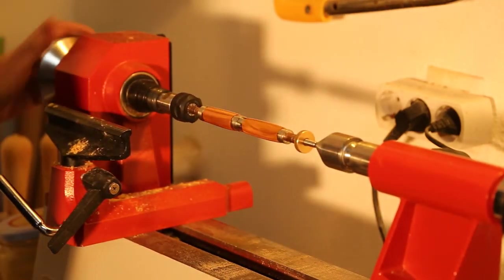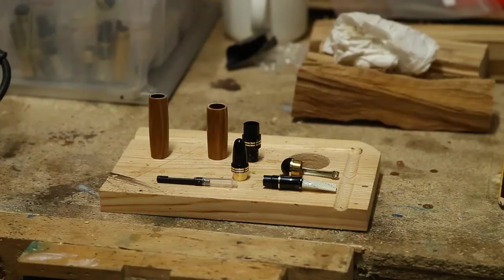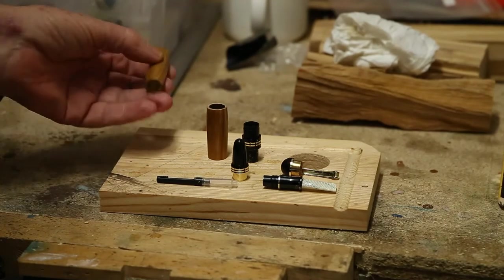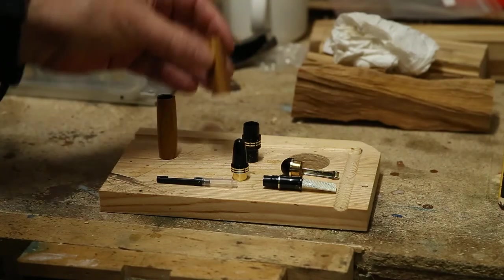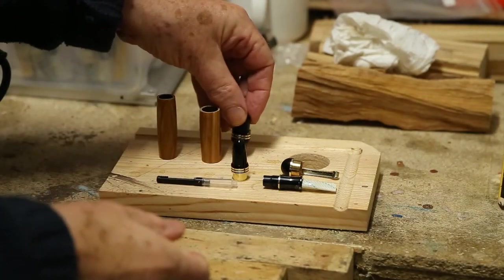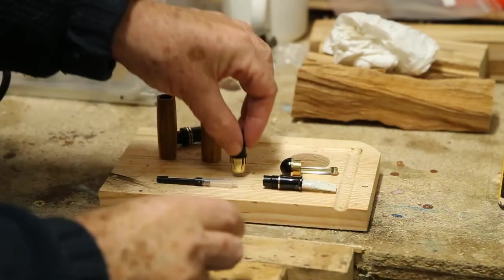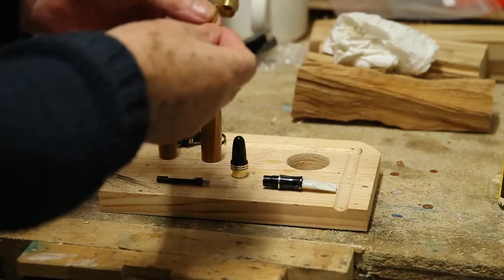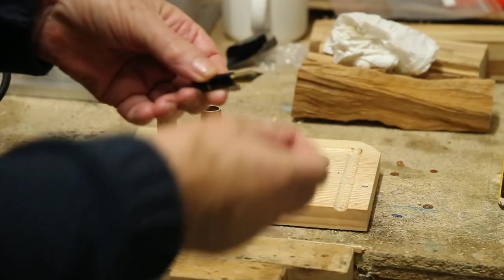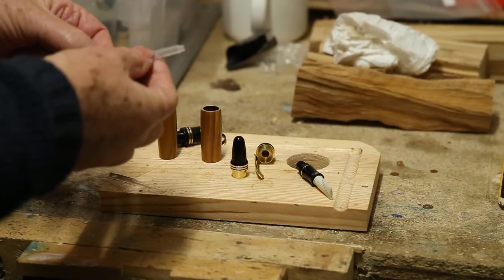So these are the parts of the pen again, our two barrels or tubes, the middle piece, end cap, other end cap with clip, and the nib. This little thing protects the nib while you're working on it. This little thing here is the ink reservoir.